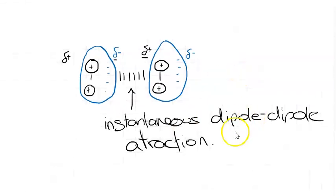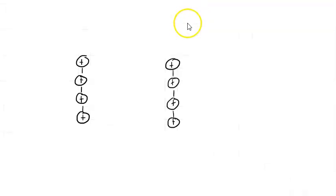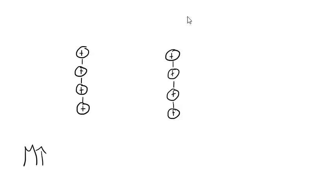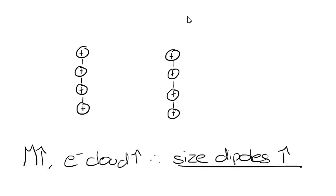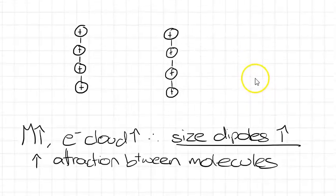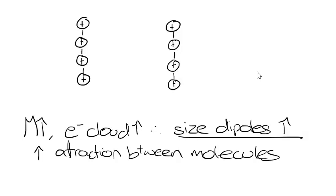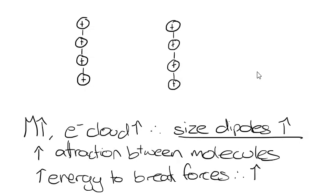So, the thing that we need to know as well about these instantaneous dipole-dipole attractions is that as the molecular mass increases, the electron cloud increases, and so the size of the dipoles increases. And so, because the size of the dipole-dipoles increases, we're going to have an increased attraction between the molecules. So, because we've now got an increased attraction between the molecules, that will mean that we need more energy to break forces, and therefore, we've got a higher melting and boiling point.